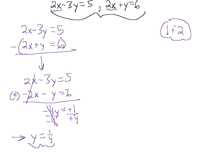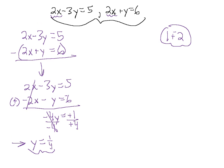We didn't do any magic here — we just used what we've been doing. Instead of subtracting the two equations directly, we added the opposite, which is the same thing as subtracting — it just makes things simpler. Now we can substitute this 1 fourth into either equation for y and solve for the other variable.